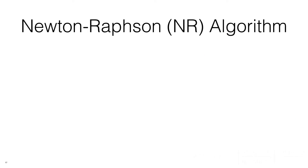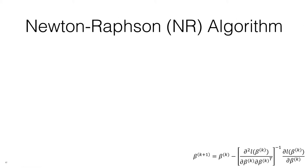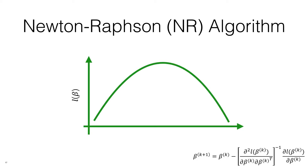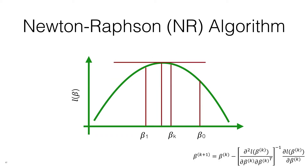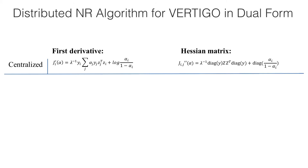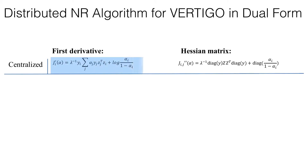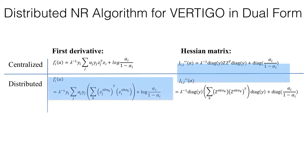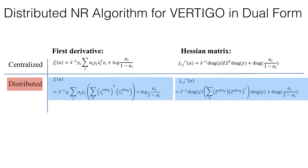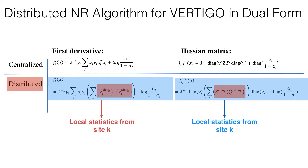We can use the Newton-Raphson algorithm to solve the optimization problem in primal form, which iteratively updates the initial guess of beta to get successively better approximations until beta converges to the optimal value, such that beta star maximizes the likelihood function. The Newton-Raphson algorithm can also be applied to the dual form optimization, where we need to compute the first derivative and Hessian matrix of the likelihood function in dual form. After carefully reordering the first derivative and Hessian matrix in the dual form, we can develop a distributed update rule for vertically partitioned data, where only site-wise local statistics need to be exchanged.